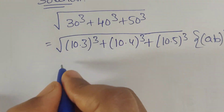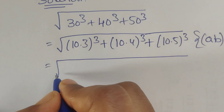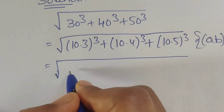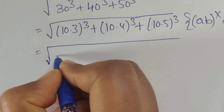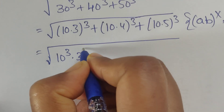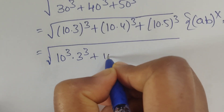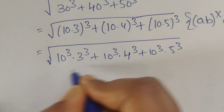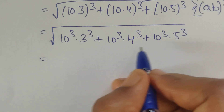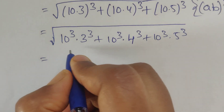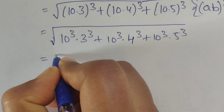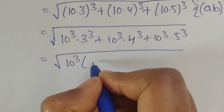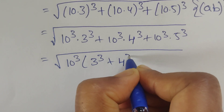Applying the exponent to each factor, we get 10³×3³ + 10³×4³ + 10³×5³. In all three terms, we have the common factor 10³, so we take 10³ out as a common factor.